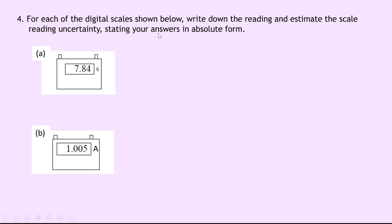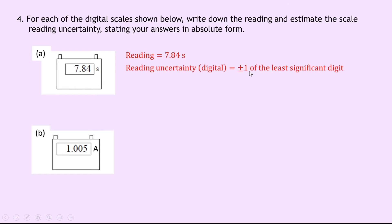Question four says: for each of the digital scales shown below, write down the reading and estimate the scale reading uncertainty, stating your answers in absolute form. In part a we've got 7.84 seconds, giving a reading of 7.84 seconds. The reading uncertainty in the digital scale is plus or minus one of the least significant digit, so it's plus or minus 0.01 seconds. Writing this in absolute form: 7.84 ± 0.01 s.